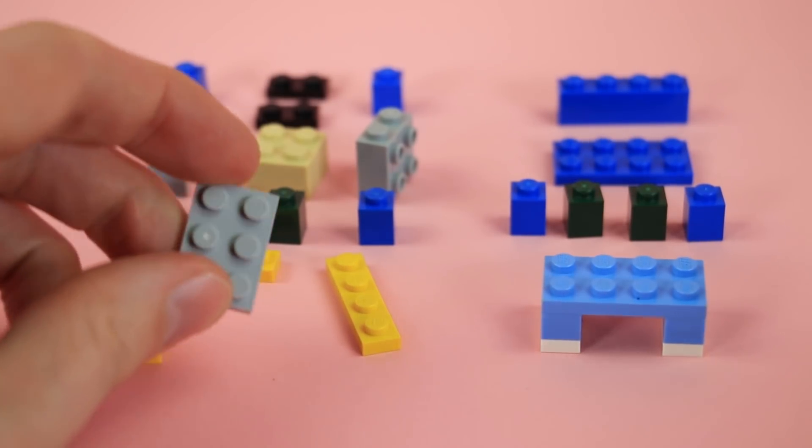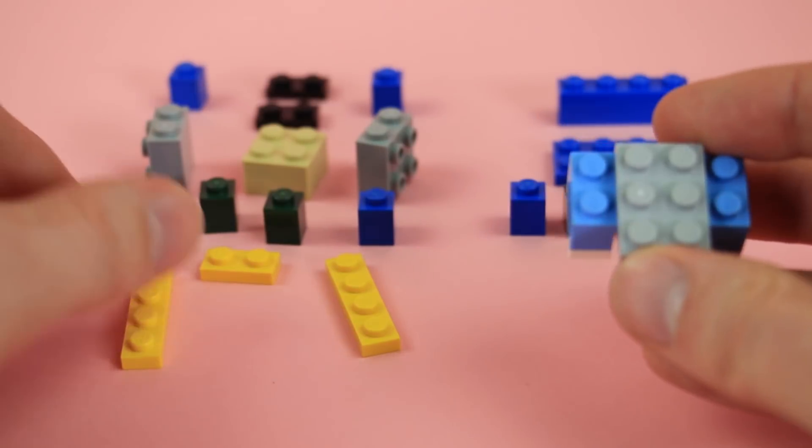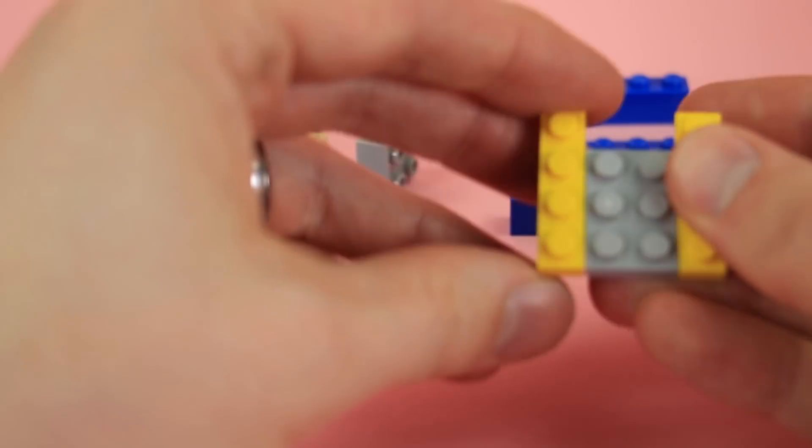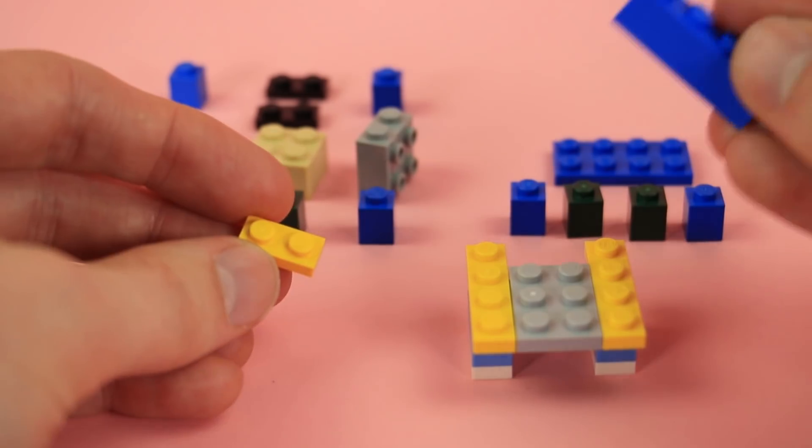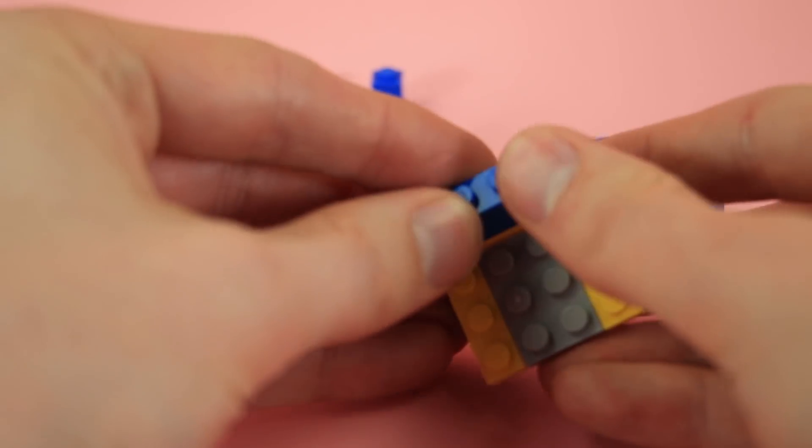Next layer up, gonna start with a 2x3 light gray plate in the center. Do some 1x4s in yellow on each side. This piece we'll just have to hang in the abyss for a second. Then we'll take a 1x4 blue brick to connect that on in the back.